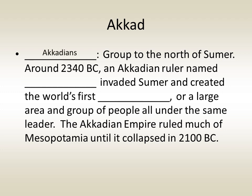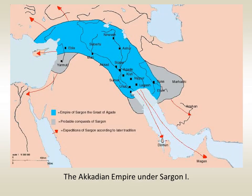Around 2340 BC, a group called the Akkadians from the north of Sumer invaded. The Akkadians were ruled by a man named Sargon, who created the world's first empire — a large area and group of people all under the same leader. The Akkadian Empire ruled much of Mesopotamia until its collapse in 2100 BC, and was much larger than the area previously controlled by the Sumerians.